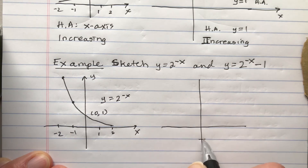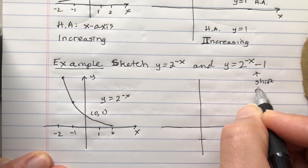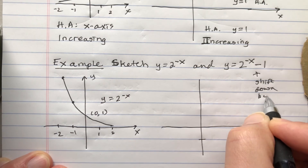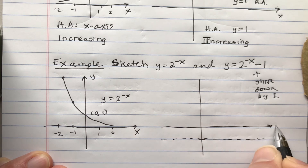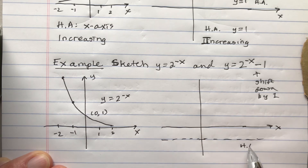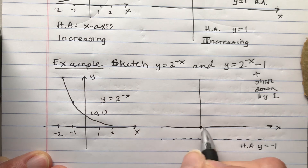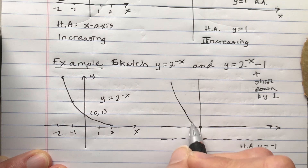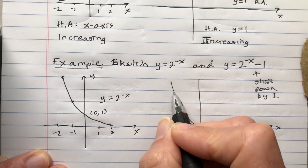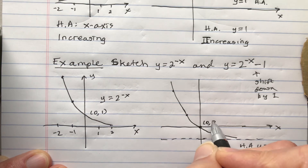So what happens when we subtract 1? This is a shift down by 1. What we really should focus on is labeling the horizontal asymptote. And what else do we want to do? We want to label the y-intercept. Those are very important. And then we want to focus on the shape of this curve.